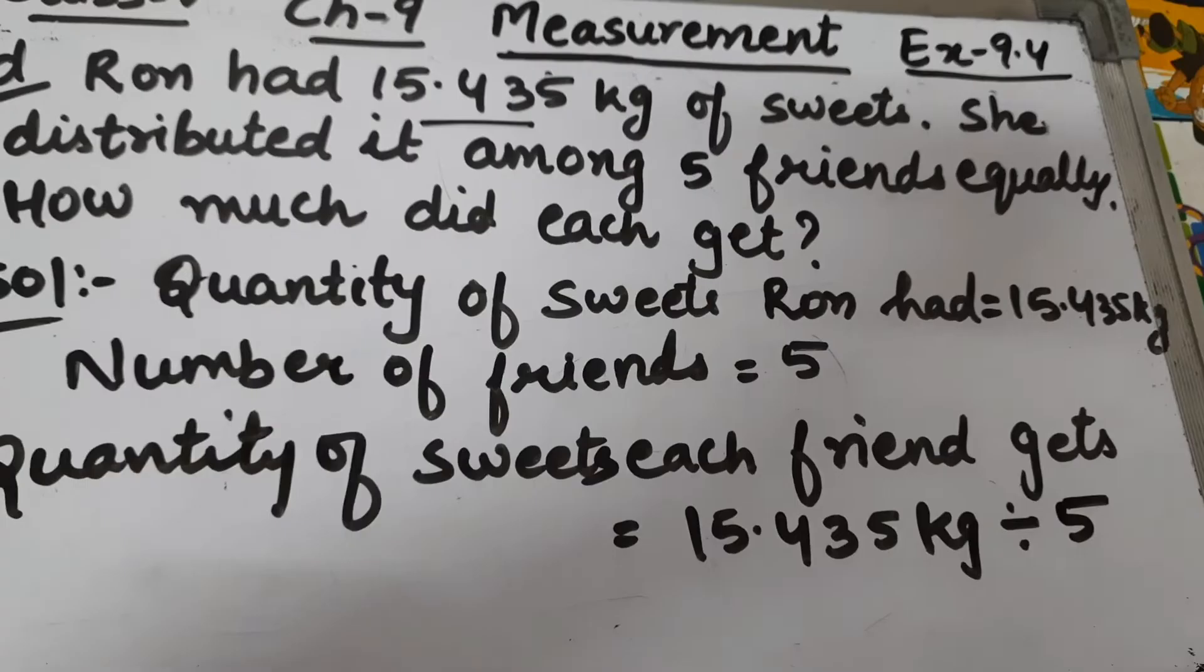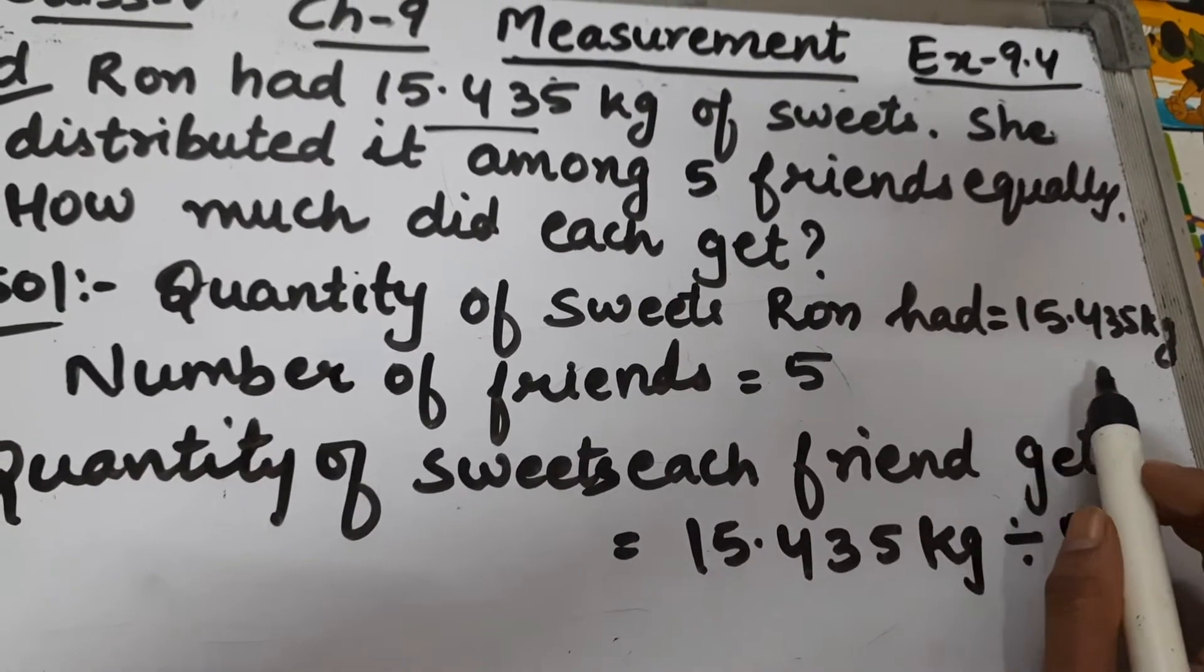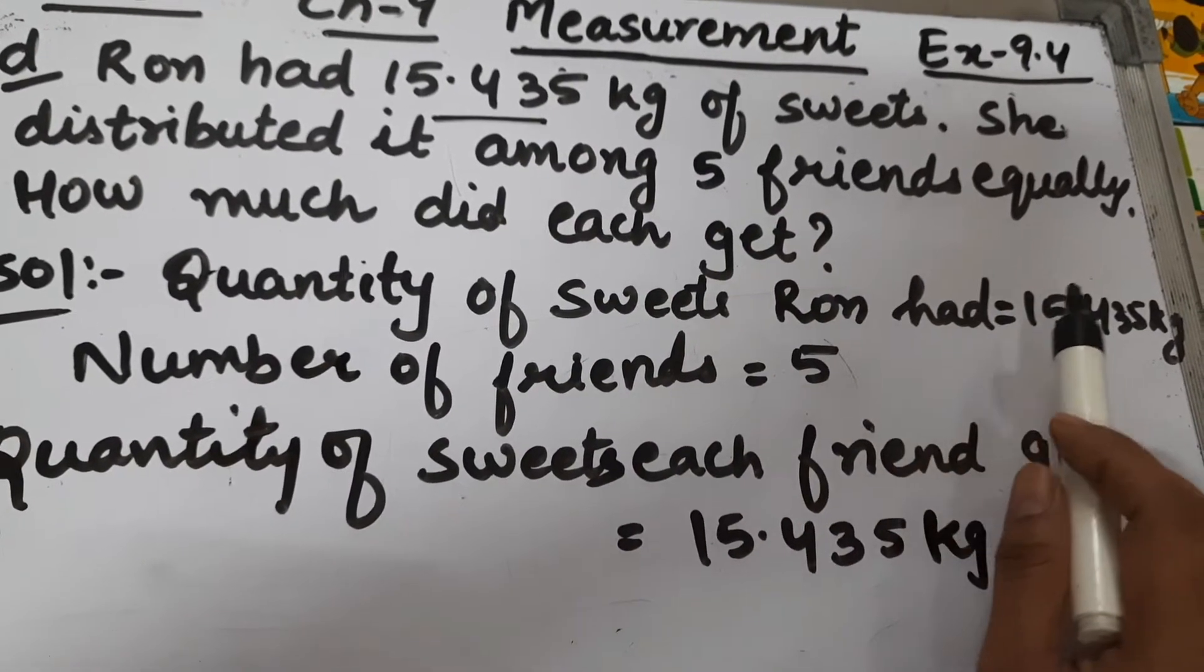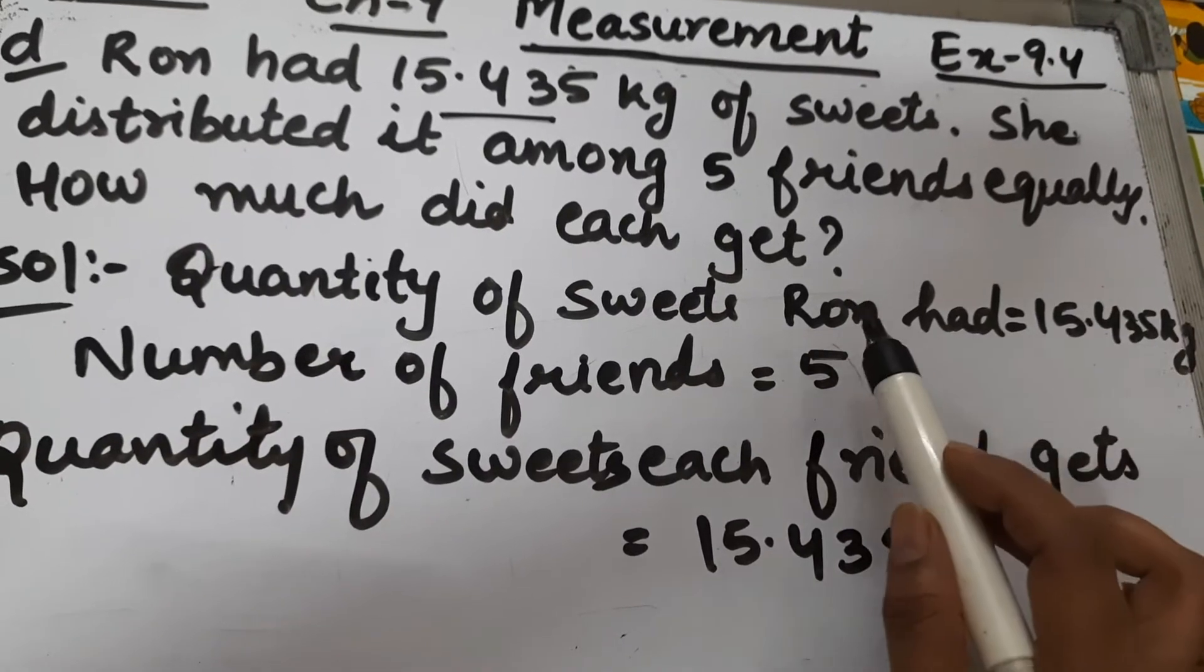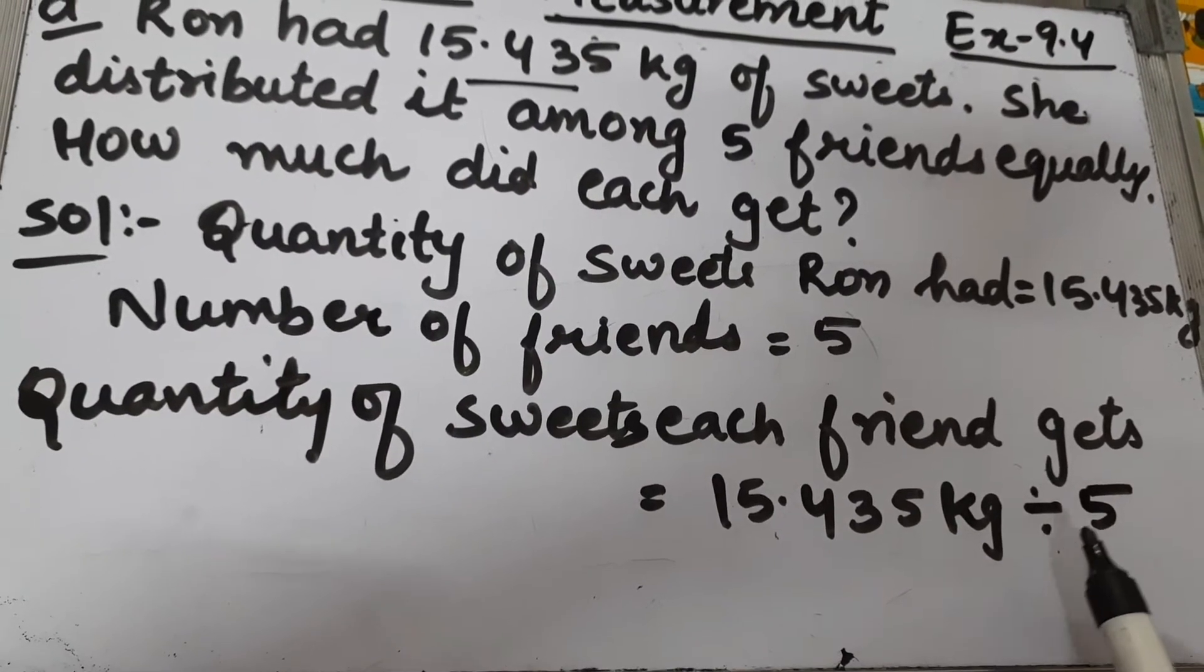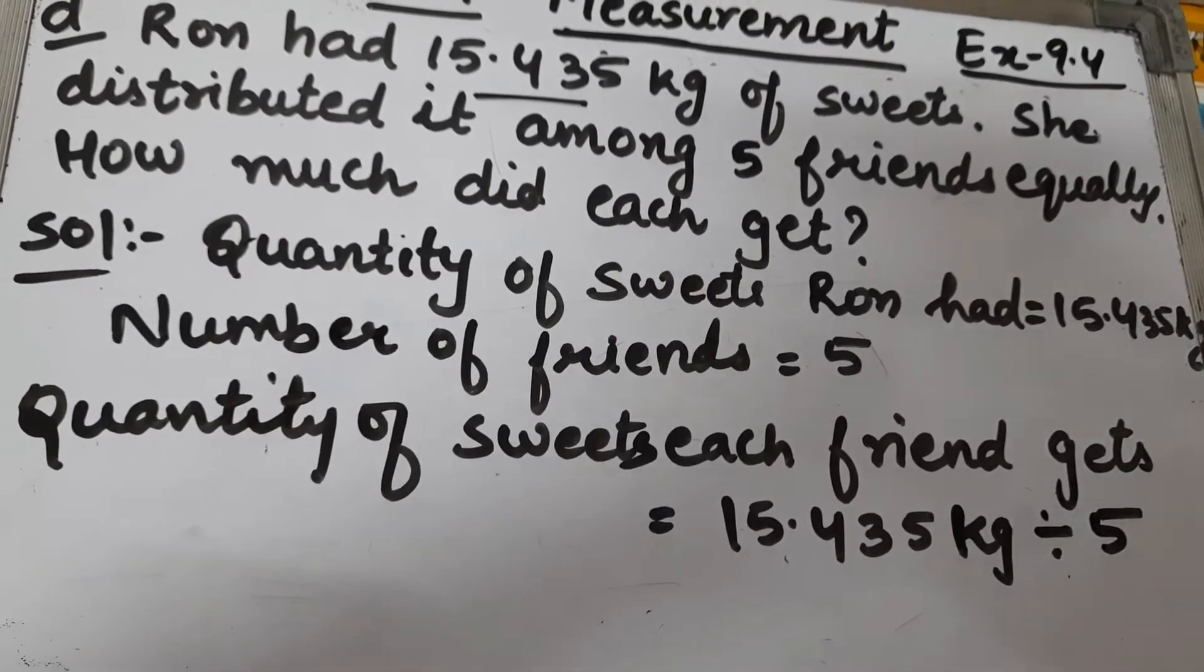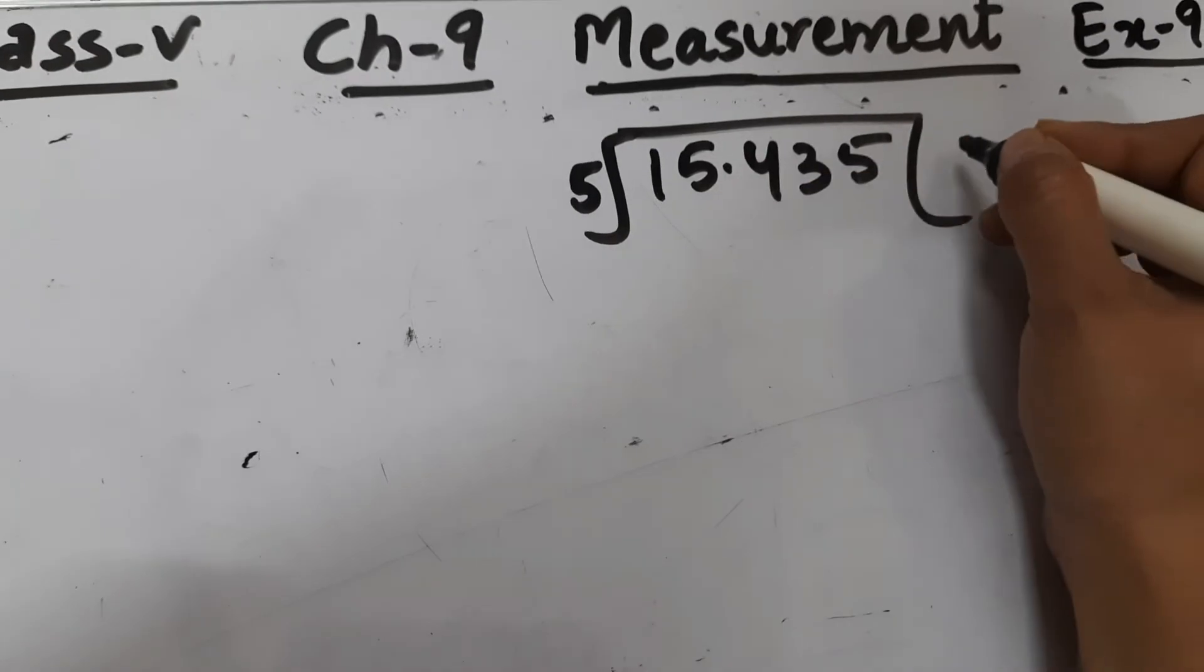Quantity of sweets Ron had: 15.435 kg. Number of friends: 5. She has to distribute 15.435 kg of sweets among five friends. So what we will do is divide 15.435 by 5. Quantity of sweets each friend gets is 15.435 divided by 5.